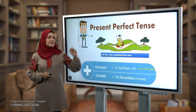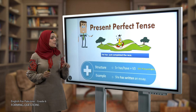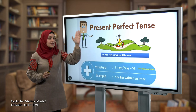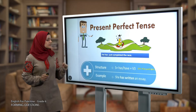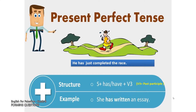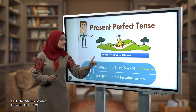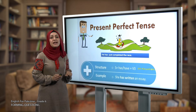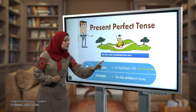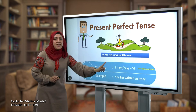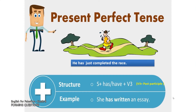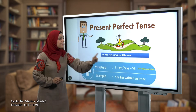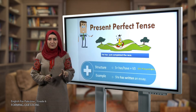Now let's learn how we form the present perfect tense. We use 'has' or 'have' plus verb three. Using 'has' or 'have' depends on the subject. If we have a singular subject, we use 'has.' If we have a plural subject, we use 'have.' So the structure is: subject + has/have + verb three, also called the past participle.